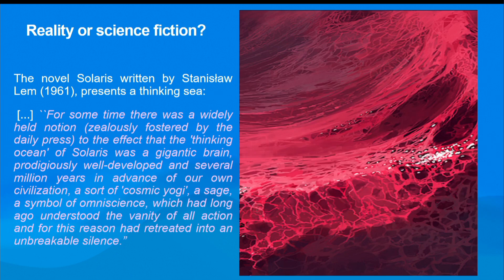That book is Solaris, which became a famous film. It's a book by Stanisław Lem presenting the idea of a sea that can think. We can read: 'For some time, there was a notion to the effect that the thinking ocean of Solaris was a gigantic brain, several million years in advance of our own civilization — a cosmic yogi, a sage, a symbol of omniscience.' What I want to explain today is that we can, in a way, fulfill the dream of Stanisław Lem and prove the existence of this thinking sea.